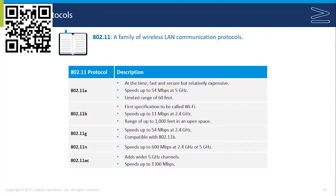When we talk about wireless, we're typically talking about 802.11, which is the IEEE — the Institute for Electrical and Electronics Engineers — standard for wireless communication. Their standard for Ethernet is 802.3, and their standard for token ring was 802.5. 802.11 is Wi-Fi.